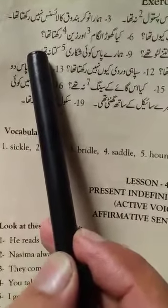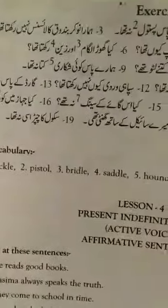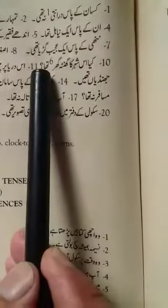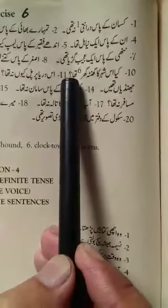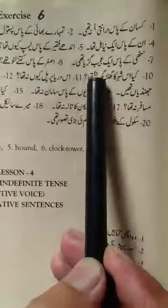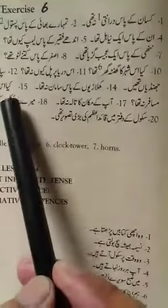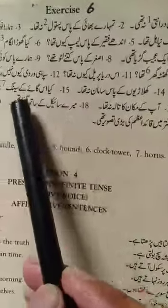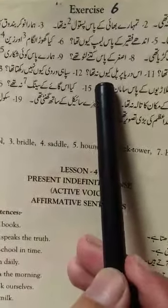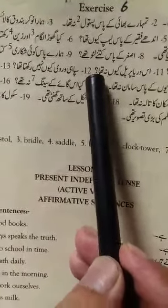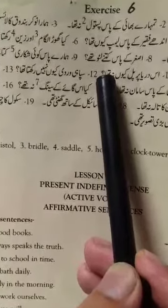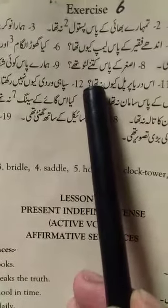'We had no hound.' شکاری کتے کو 'hound' کہتے ہیں۔ کیا اس شہر کا گھنٹہ گھر تھا — 'Had this city a clock tower?' گھنٹہ گھر کا مطلب clock tower ہے۔ آپ دیکھ رہے ہیں کہ ان سب میں ہم 'had' لگا رہے ہیں۔ اس دریا پر پل کیوں نہ تھا — 'Why had this river no bridge?'